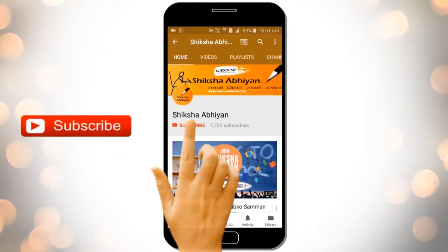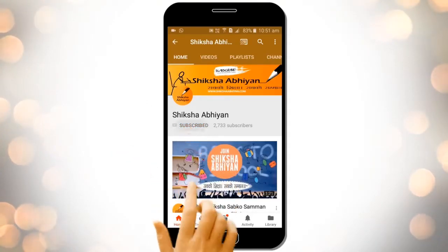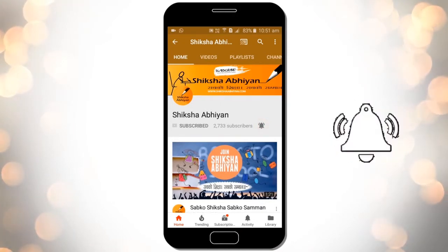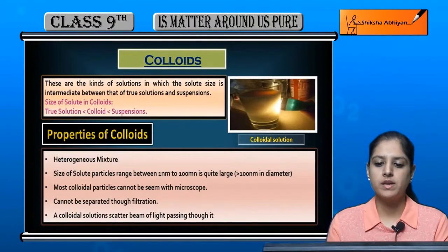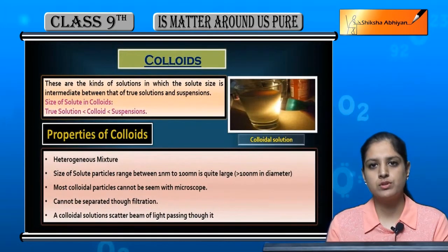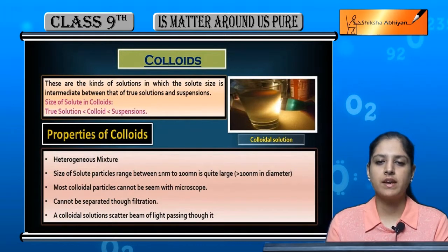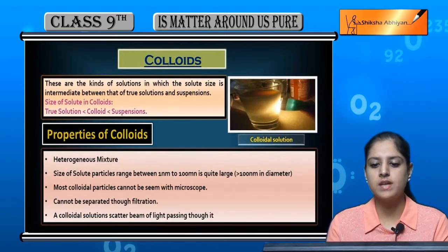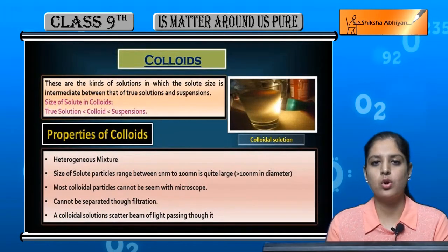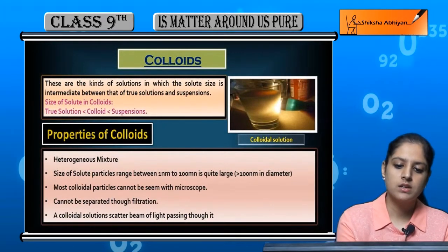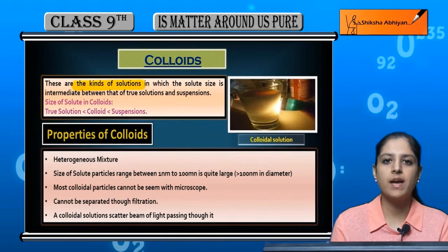Subscribe to our channel by clicking the subscribe button, click the bell button, and enjoy the latest uploads. Now the next topic is colloid. Colloid is our third type of solution — first was true solution, second was suspension, and the third is colloid. These are the kinds of solutions.